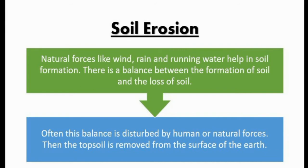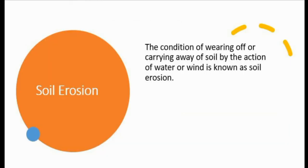Now we will learn about soil erosion. Natural forces like wind, rain, and running water help in soil formation. There is a balance between the formation of soil and the loss of soil. Often this balance gets disturbed by human activity or by some natural forces, and then the topsoil is removed from the surface of the earth.